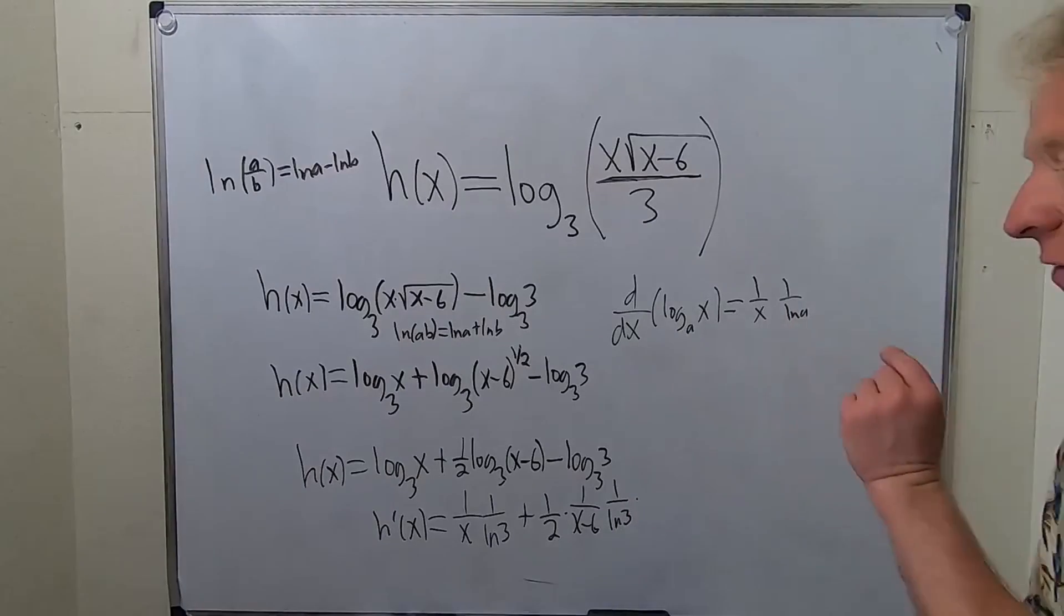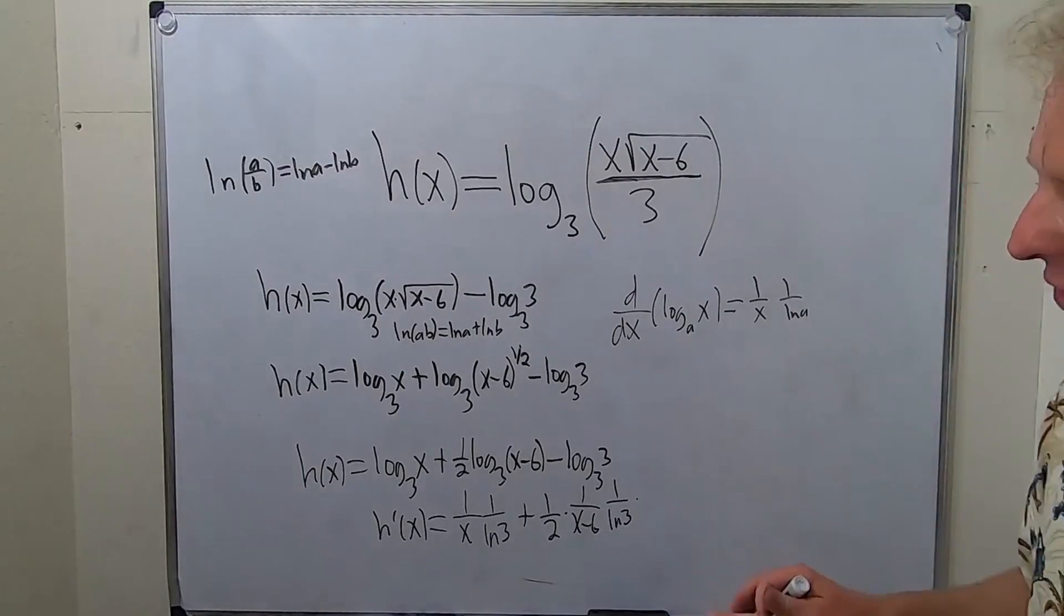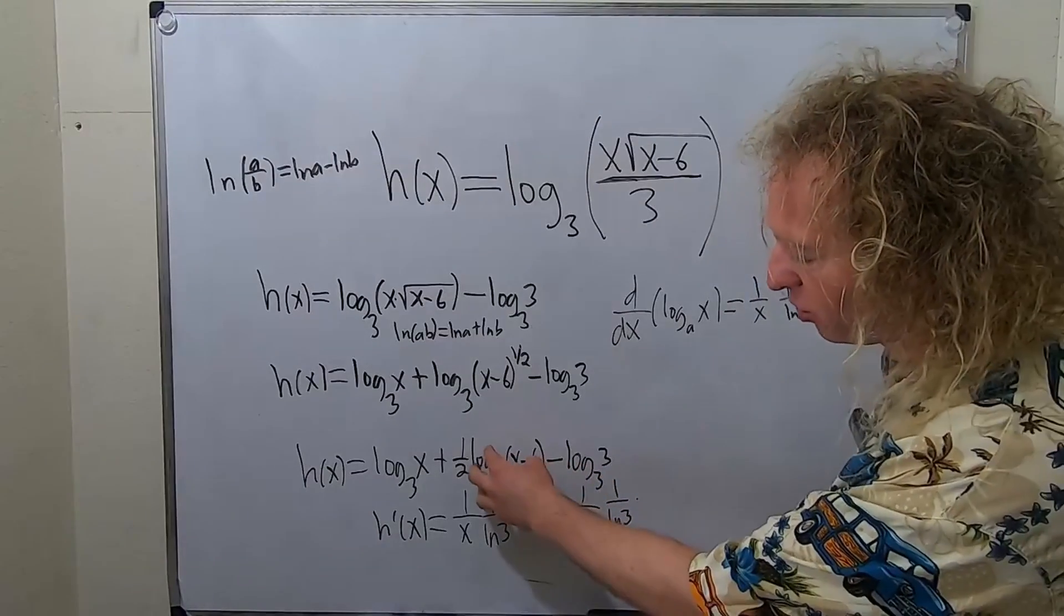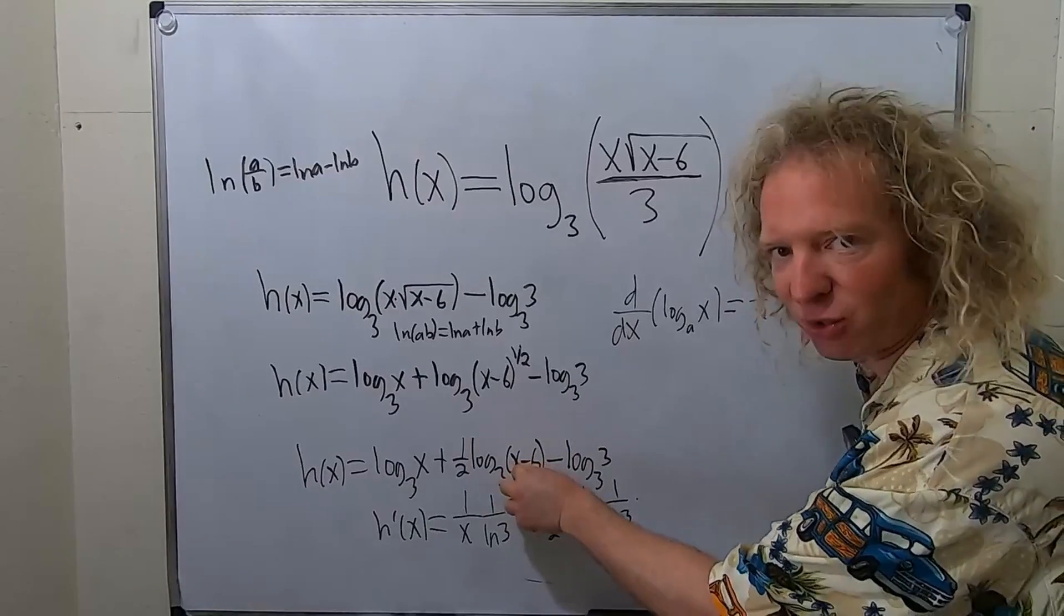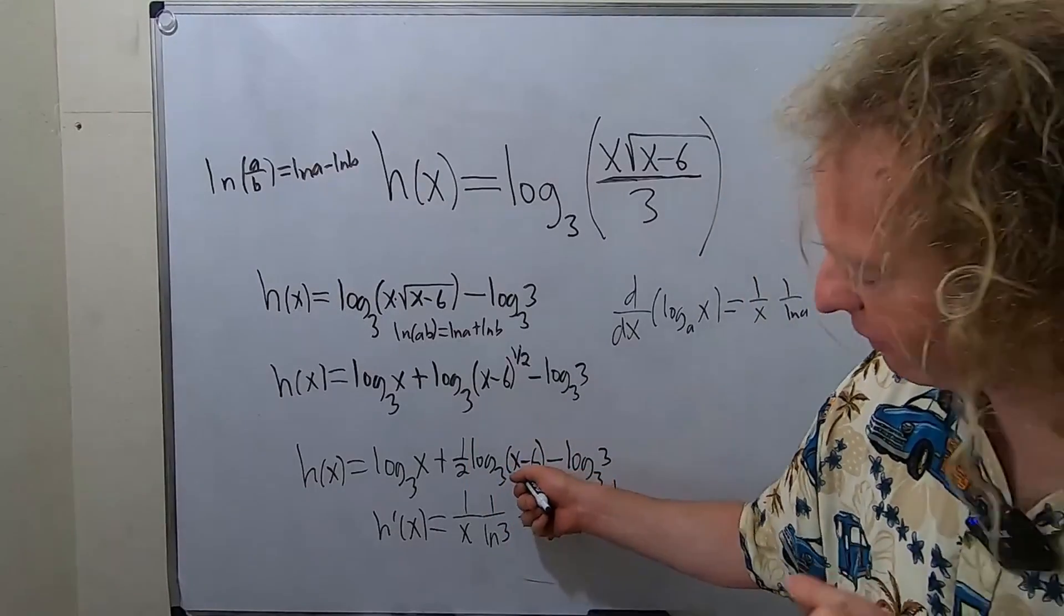times the derivative of the inside. So notice the order in which everything was explained. When you take this derivative, it's just 1 over this, 1 over that, then you multiply it by the derivative of the inside. The derivative of the inside is 1.